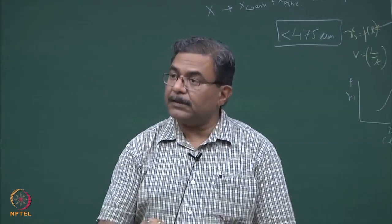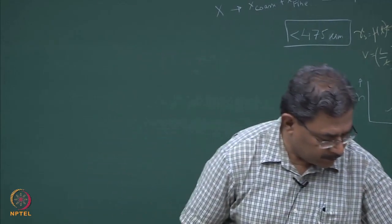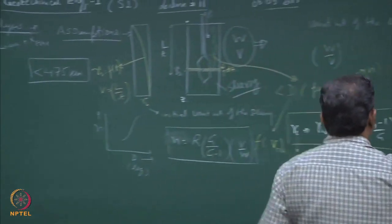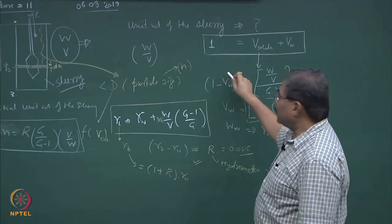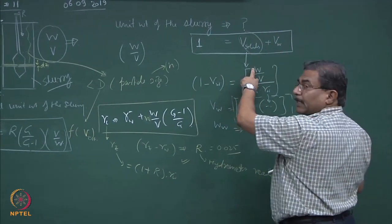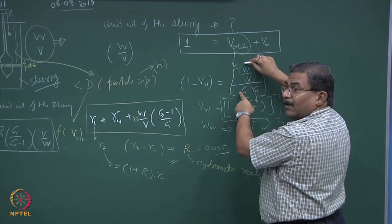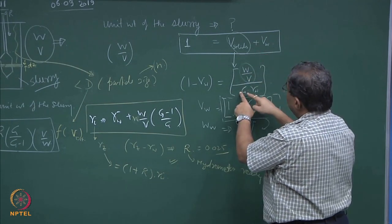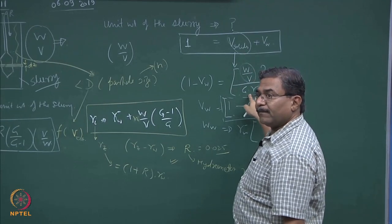Any questions? Regarding the expression for V solution — the volume of the solids can be computed. W upon V is the unit weight of the total suspension, and G into gamma_w is the density of the solids which are present. So this is how I am getting the solids. Total suspension volume will be unity — say 1000 cc. So volume of solids plus volume of water: how will you compute the volume of solids? If I know the total weight of the soil added in certain volume V, divided by G into gamma_w, this is the component which gives you the dry component of the solids in suspension form.